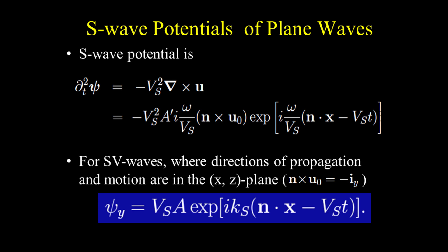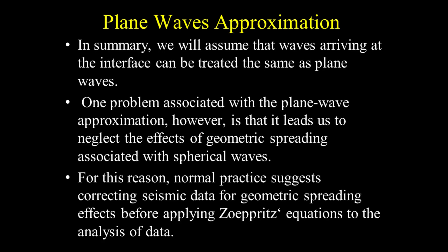Similarly, we derive the plane wave expression for the S wave potential by substituting the plane solution into the corresponding relationship. For SV waves, where directions of propagation and motion are both in the X-Z plane, only Psi-Y is non-zero. We obtain a simple expression after applying two partial time integrations. In summary, we assume that waves arriving at the interface can be treated as plane waves. One problem with the plane wave approximation, however, is that it leads us to neglect geometric spreading associated with spherical waves, so normal practice suggests correcting seismic data for geometric spreading effects before applying Zoeppritz's equations.